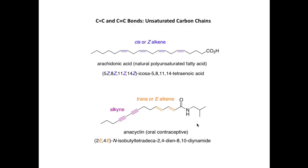In this other example, anacyclin, we have two alkenes with the trans or E configuration. When alkenes have this configuration, we maintain the zigzag arrangement of carbon atoms. Finally, when drawing alkynes, we have a linear arrangement of carbon atoms with an angle of 180 degrees. Again, it's very important when drawing molecules such as anacyclin to give an idea of the approximate shape of the organic molecule.